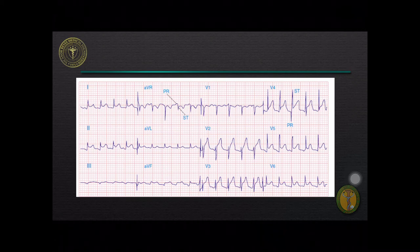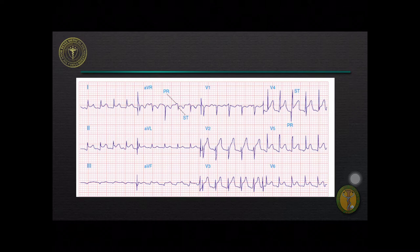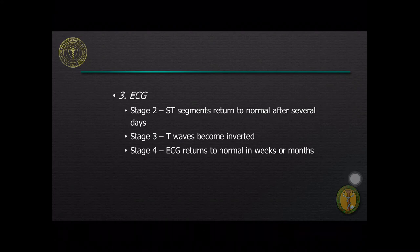This tracing shows diffuse ST elevation in leads 1, 2, 3, AVF, V2 to V6, with upward concavity and reciprocal depression in AVR, suggestive of acute pericarditis. Stage 2 is when the ST segments return to normal after several days. Stage 3, the T waves become inverted.